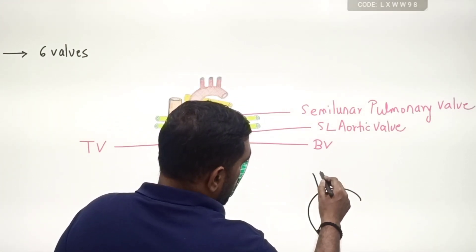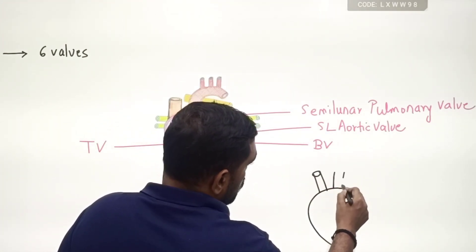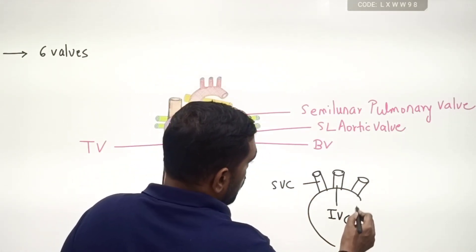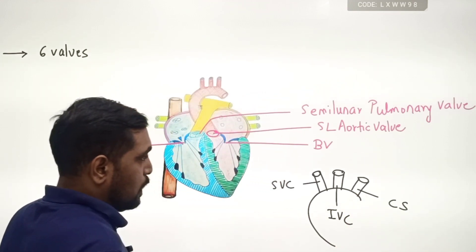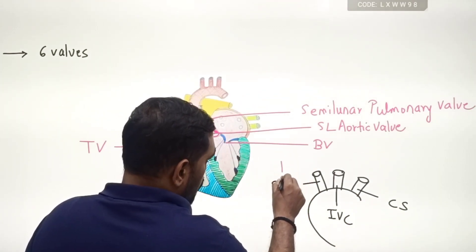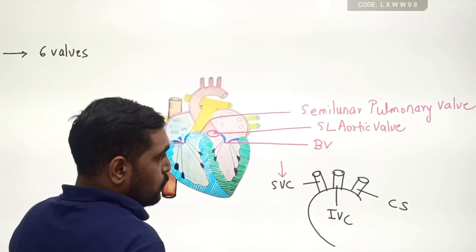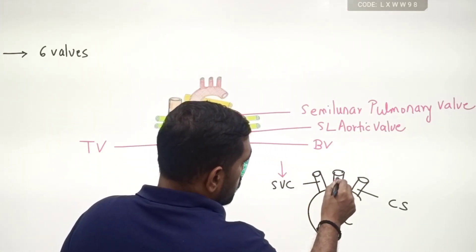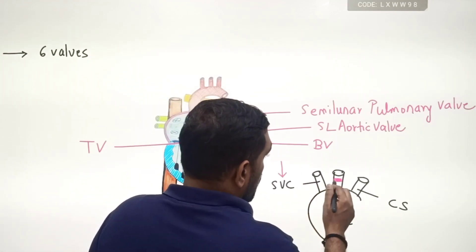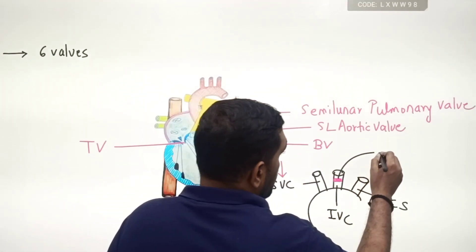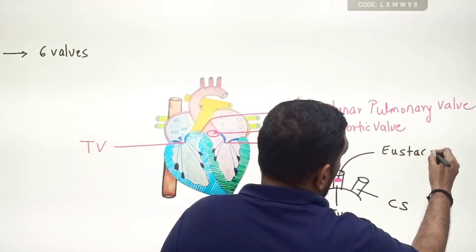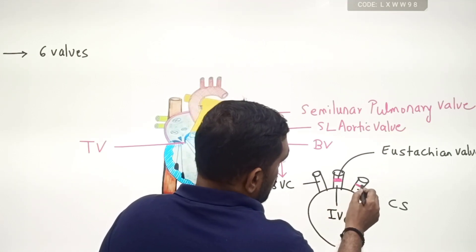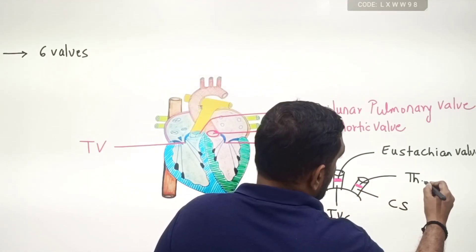On the right atria, blood comes into the heart through three separate openings: one is superior vena cava, two is inferior vena cava, three is coronary sinus. Superior vena cava brings blood with gravity, so it does not need a valve. Inferior vena cava brings blood against gravity, so it requires a valve — this valve is called the eustachian valve. The coronary sinus also has a valve called the thebesian valve. So in total, there are six valves present in the human heart.